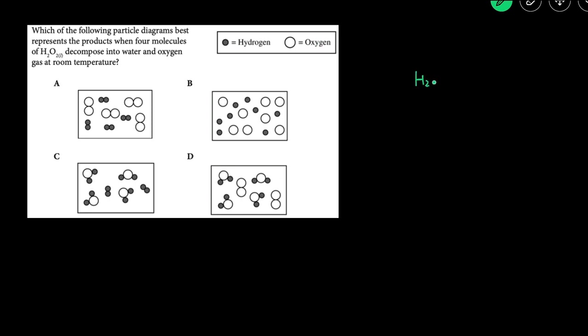Well, we know that the products are water H2O and O2, so we know that water should look like this. We should have two shaded H's and one white oxygen, and then O2 should just be two white circles.